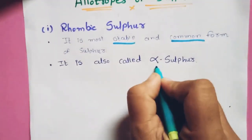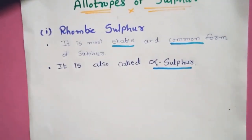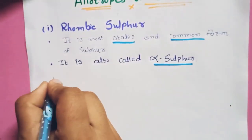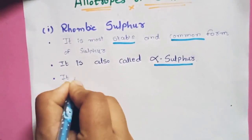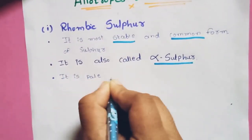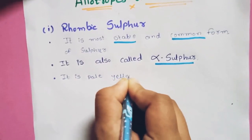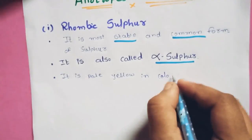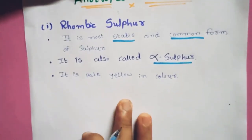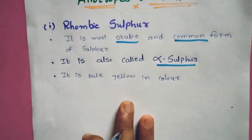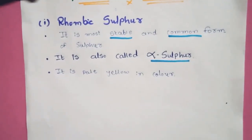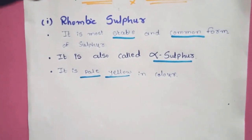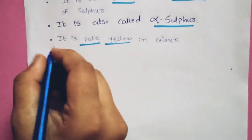Rhombic sulfur is also called alpha sulfur. Its color is pale yellow — so the color of rhombic sulfur is pale yellow. It is insoluble in water but dissolves in organic solvents.